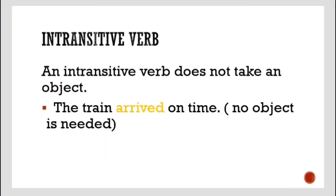Now, an intransitive verb does not take an object. In transitive verbs you require an object, but intransitive verbs do not require any object — the sentence can be complete without one. For example: the train arrived on time. We don't know which train, but the train was on time. The object is not mentioned and is not required.